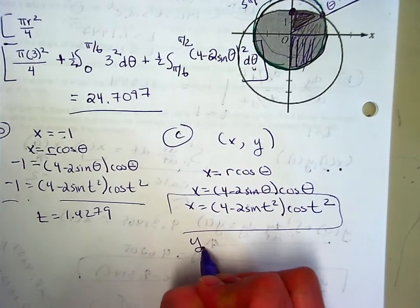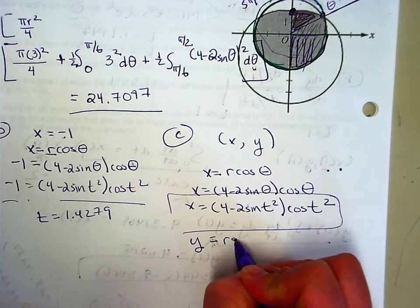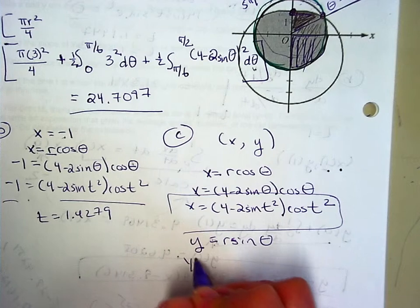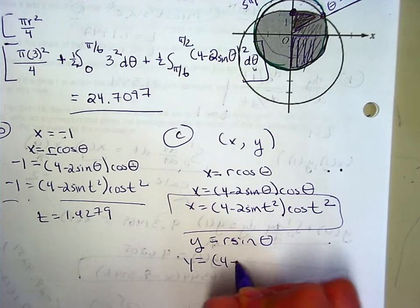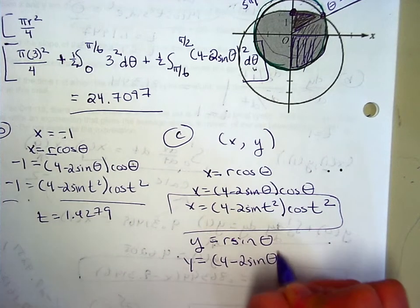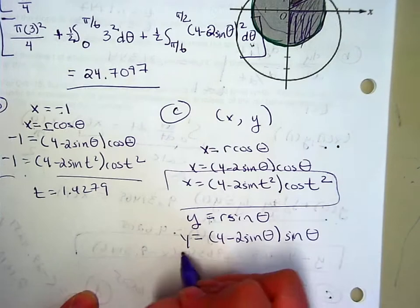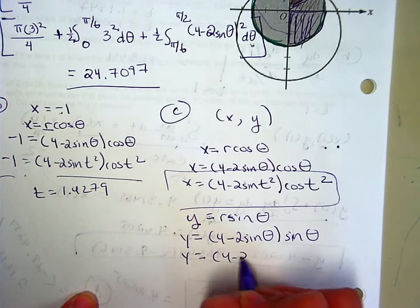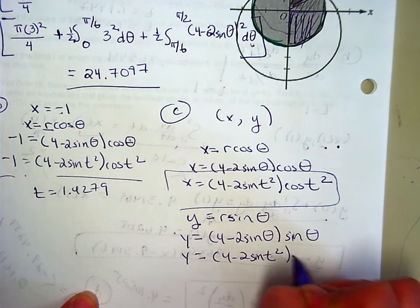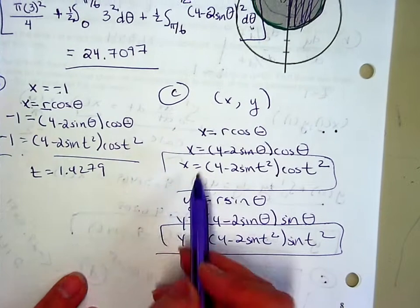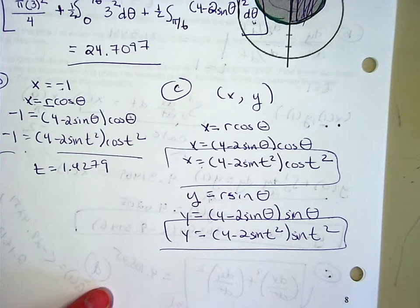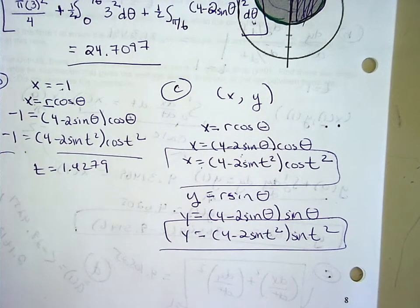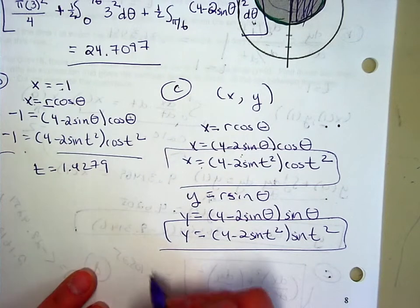Do the same thing for y. y = r sin(θ). Replace the r with 4 - 2sinθ, times sinθ. Replace the θ with t². There's my... So these two pieces make up your position vector. Your x component and your y component. And then they ask you to find the velocity vector at 1.5.